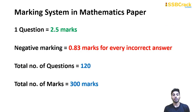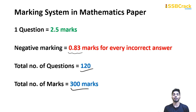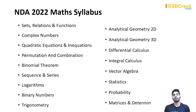First things first — the marking system in mathematics. There are a total of 300 marks and 120 questions. Each question carries 2.5 marks, and there is negative marking of 0.83 marks for every incorrect answer, so keep that in mind.